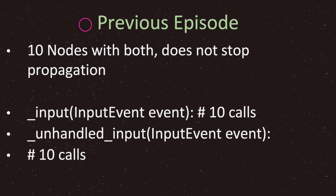In the previous episode we talked about input propagation. To recap: if our scene tree has ten nodes and all nodes have input and unhandled input events, we call all ten nodes' input events, and after all ten have been called we move on to unhandled input. That makes twenty calls total — ten for input event and ten for unhandled input event, one call for each node.